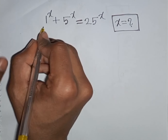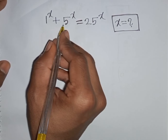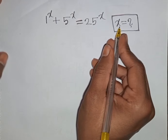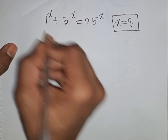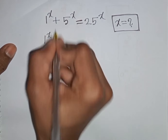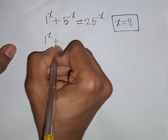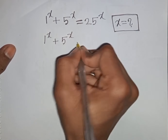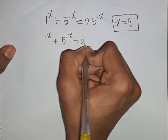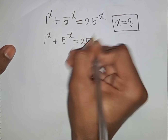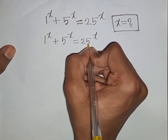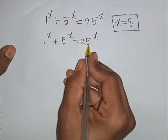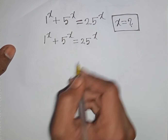How to solve: 1^x plus 5^x is equal to 25^x. Find the value of x. We have 1^x plus 5^x is equal to 25^x. Now we divide both sides by 25^x.